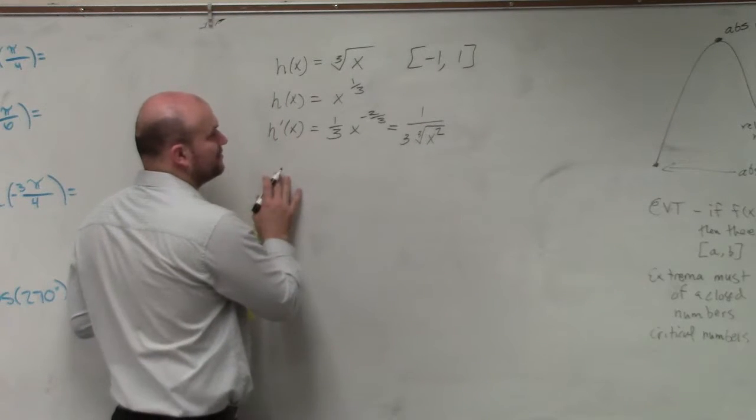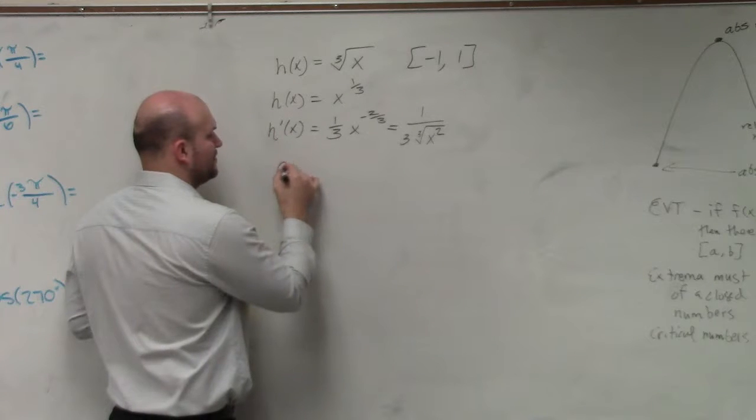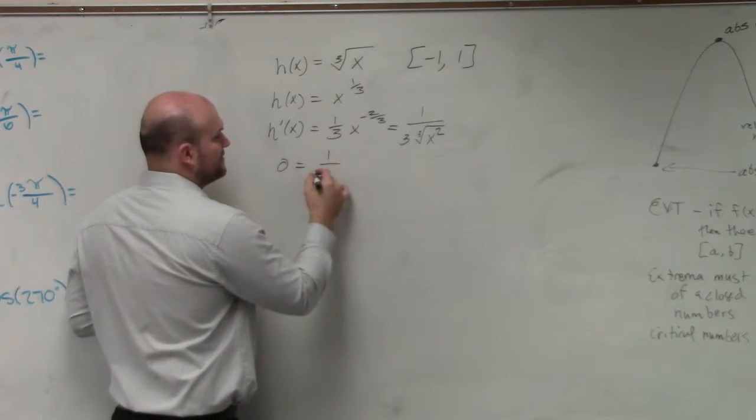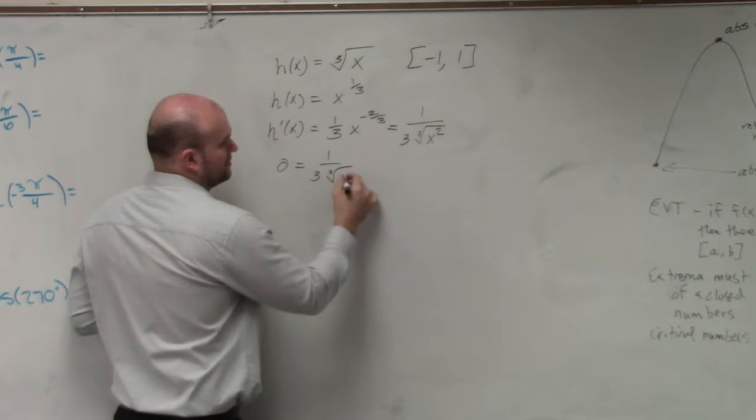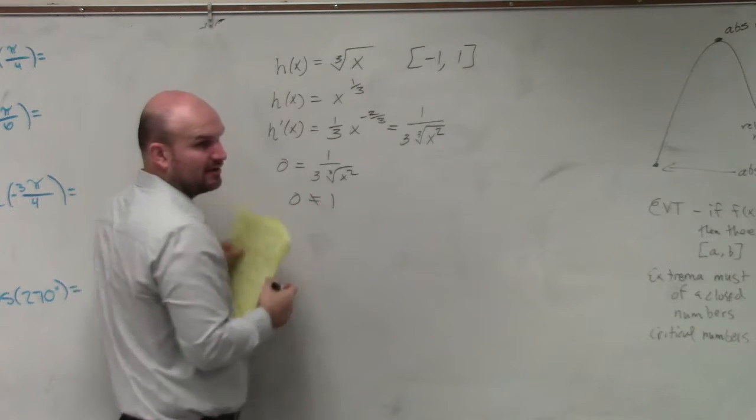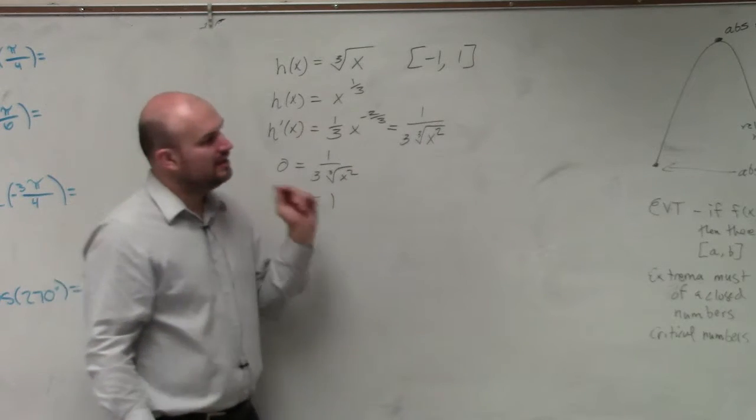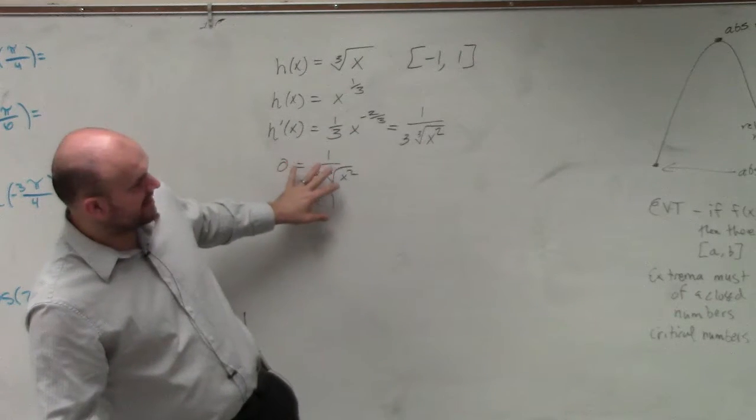And then we want to basically find h of 0. Well, when this is set equal to 0. Well, ladies and gentlemen, first of all, that doesn't work, because that's going to give you 0 cannot equal 1, right? So this is going to provide us with no critical numbers. However, if you look at it that way, then yes, we have no critical numbers.